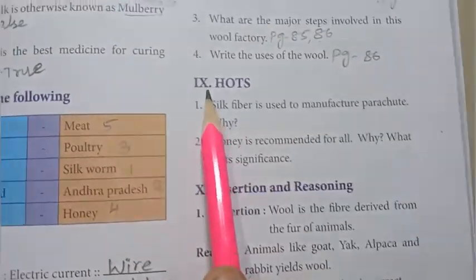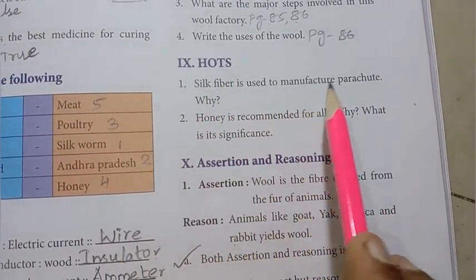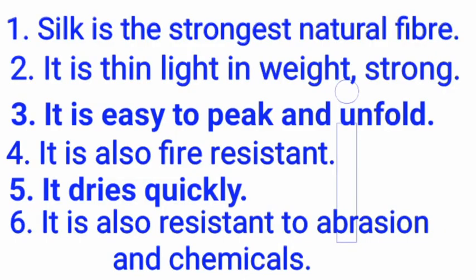Roman Numeral 9 HOTS, 1st question: Silk fiber is used to manufacture parachutes — why? Answer: 1) Silk is the strongest natural fiber. 2) It is thin, light in weight, and strong. 3) It is easy to pack and unfold. 4) It is fire resistant. 5) It dries quickly. 6) It is resistant to abrasion and chemicals.